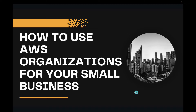Today I'm going to talk about a very important feature or service within AWS called AWS Organizations, and I'm going to show you how to use it for your small business. One of the reasons for making this video is I have seen so many small businesses totally ignoring foundational services like AWS Organizations, Control Tower, and creating those landing zones. They just start with their workloads in production, development, and testing — I strongly recommend using these best practices before you actually start using AWS services for your workloads.